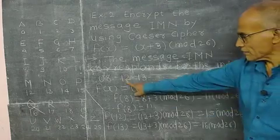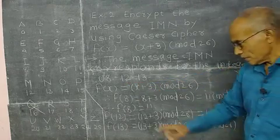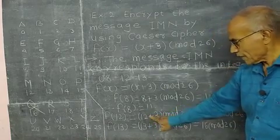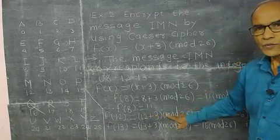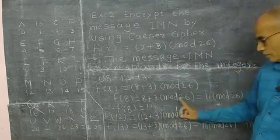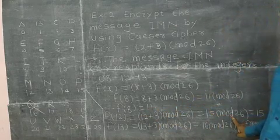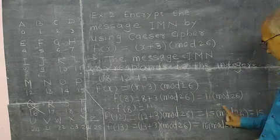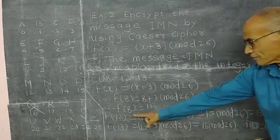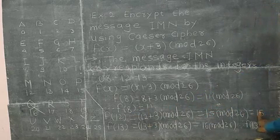Next value is 12. F of 12. That means x plus 3, 12 plus 3, mod 26. 12 plus 3 is 15, mod 26. Again, this 15 is less than 26. So f of 12 is equal to 15.